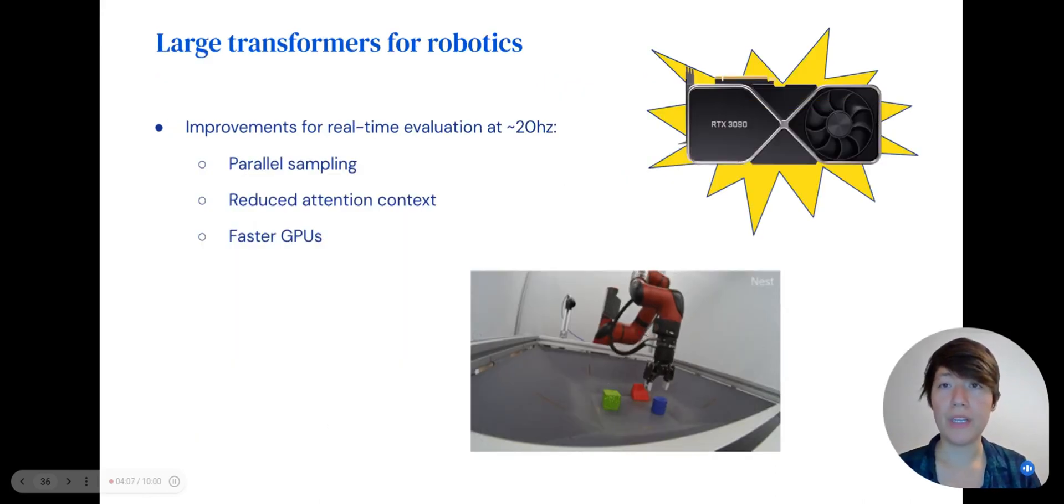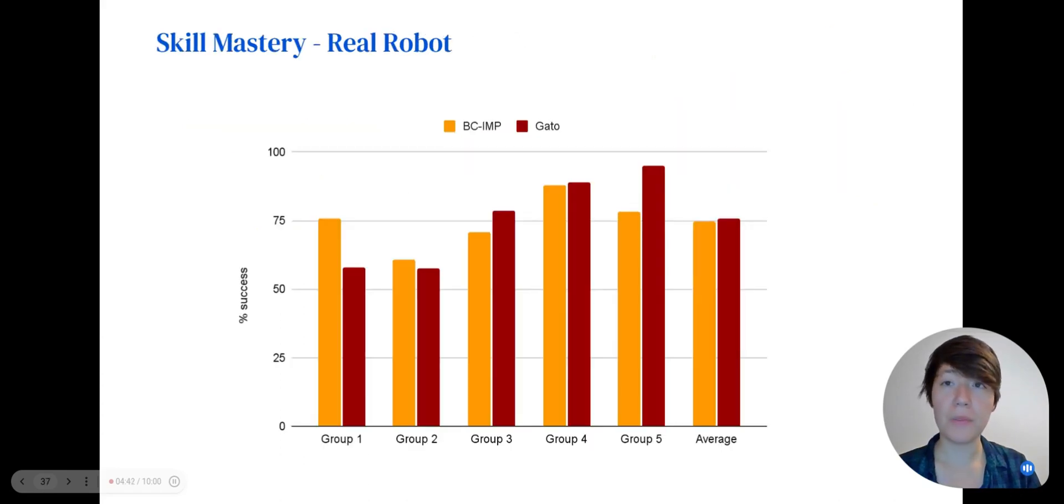The Sawyer robot typically runs at 20 hertz or 50 milliseconds per time step, otherwise performance for control starts to degrade. Naively running the 1.18 billion parameter model on the existing setup is slower than this real-time rate, so we devised some improvements to run Gato on the real robot. We sampled the five action tokens in parallel instead of sequentially to reduce the overhead of sampling during evaluation. We reduced the attention context of our model. And very importantly, we used faster GPUs, NVIDIA RTX 3080s.